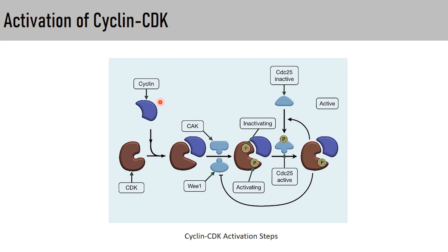The activation of cyclin-CDK complex occurs in steps. First, cyclin binds to CDK, and binding at the cyclin box results in exposure or opening of the kinase pocket. The second step is binding of CAK (CDK-activating kinase), which phosphorylates the CDK, exposing the substrate binding site. Meanwhile, another kinase, Wee1, acts as an inhibitory kinase — it phosphorylates the ATP binding pocket, reducing kinase activity. When both Wee1 and CAK are active, the CDK remains inactive because both domains are phosphorylated.